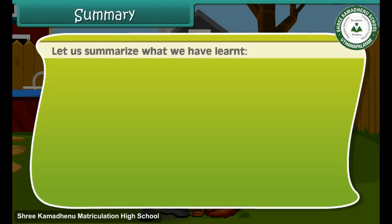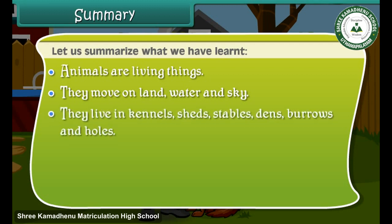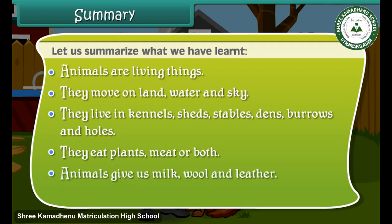Let us summarise what we have learnt. Animals are living things. They move on land, water, and sky. They live in kennels, sheds, stables, dens, burrows, and holes. They eat plants, meat, or both. Animals give us milk, wool, and leather.